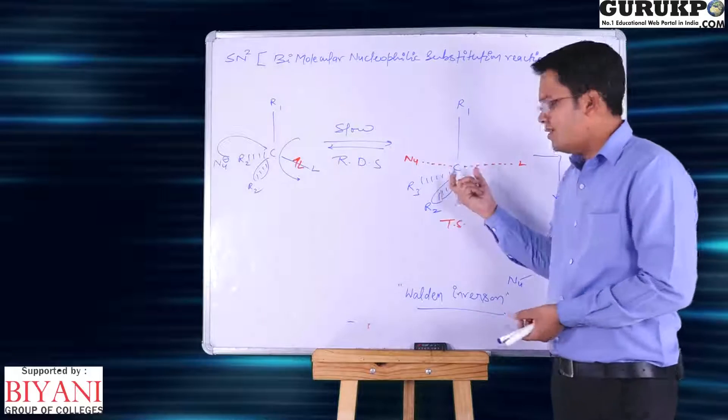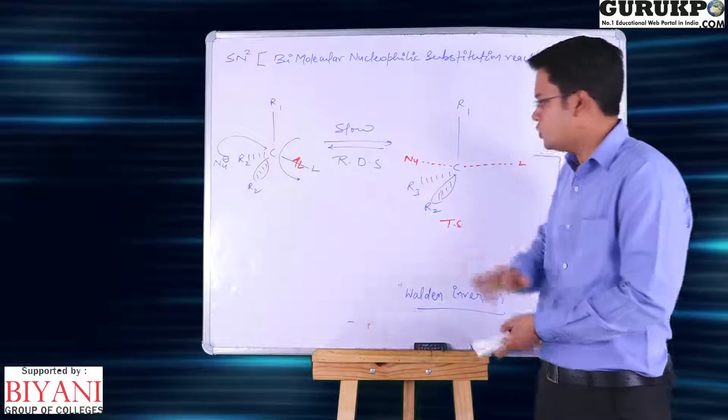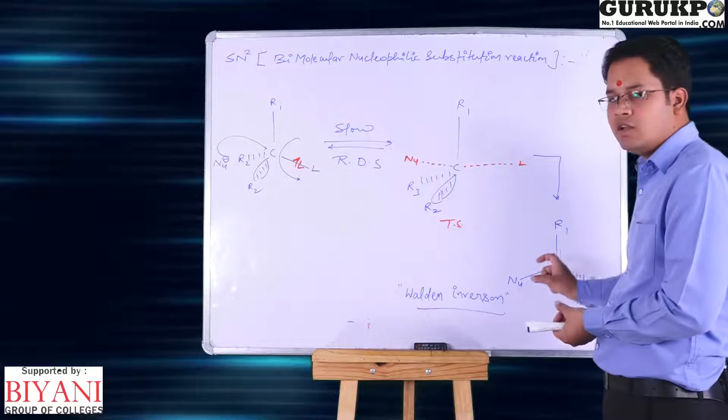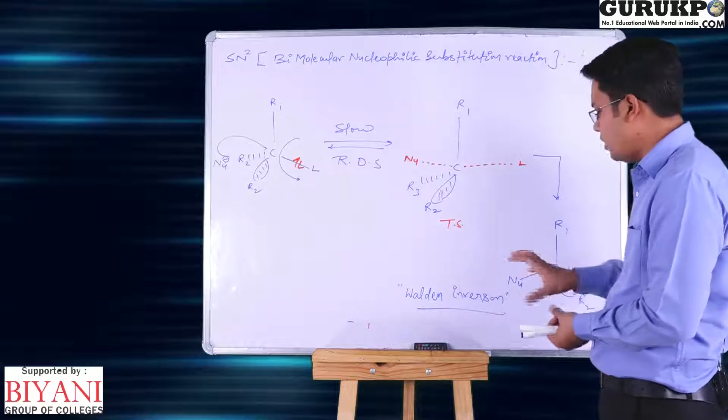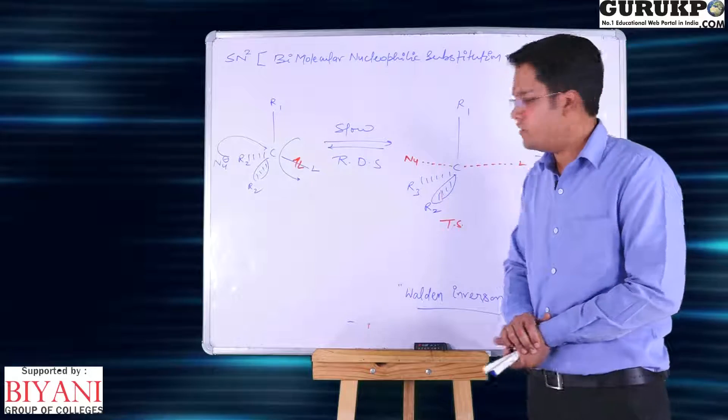During this process a transition state will be formed. This transition state is five member transition state and after the product formation is inversion in configuration. Product configuration is inversion in configuration and this inversion we call Walden inversion.